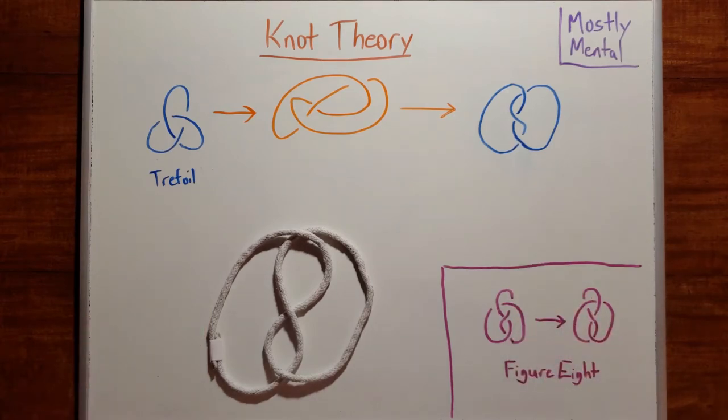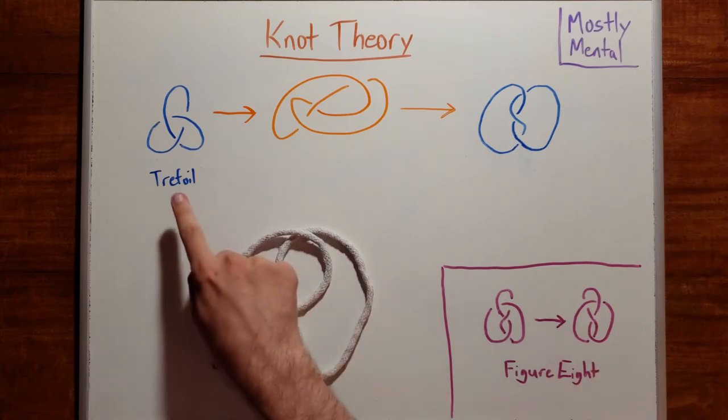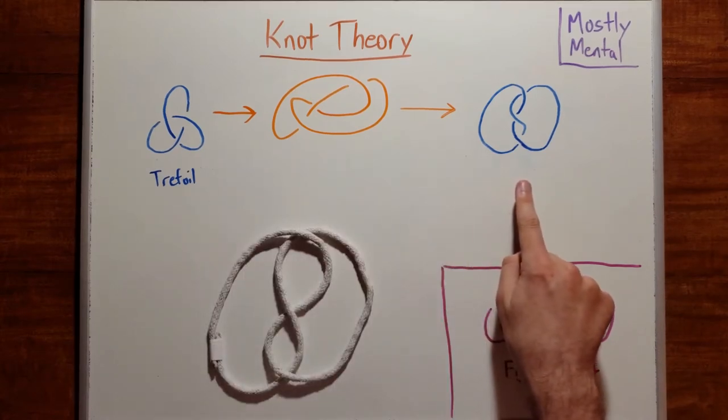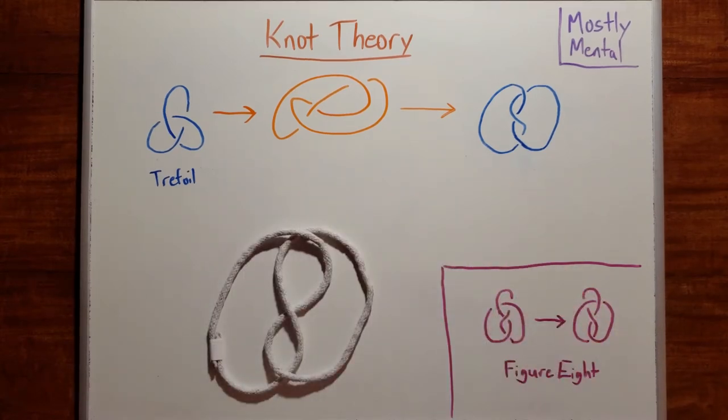Now I want you to try it out for yourself. Take your rope from earlier and tie it into this shape, known as the figure eight knot, and tape the ends together so you have a closed loop. And then transform that into its mirror image. And draw out all of the steps along the way. Pause here and take a few minutes to puzzle it out.